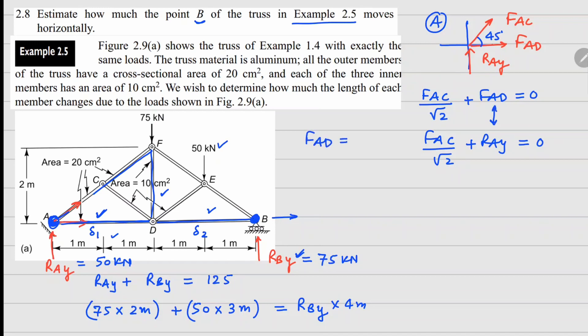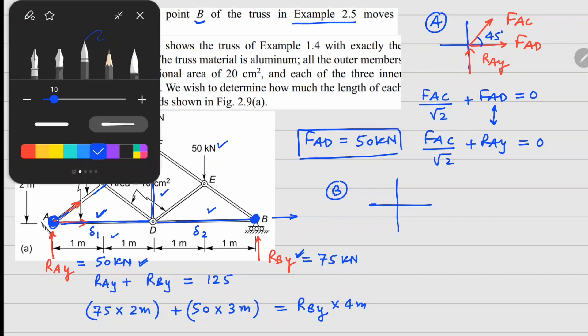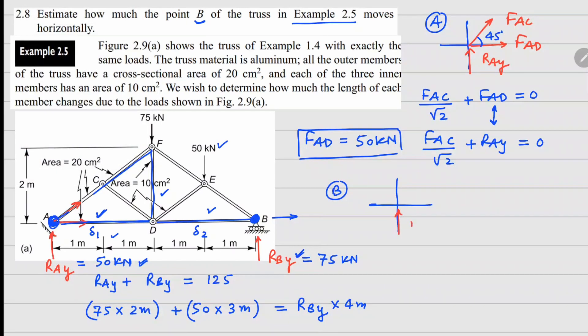Similarly, I go to point B and look at the forces there. I have RBY and one force going this way, which is FBE, and one force going this side, which is FBD. In terms of equations, the X direction gives us FBE over square root 2 (this angle is also 45 degrees) plus FBD equals zero. And FBE over square root 2 plus RBY equals zero. In this case, you can see FBD equals RBY, which is 75 kN.